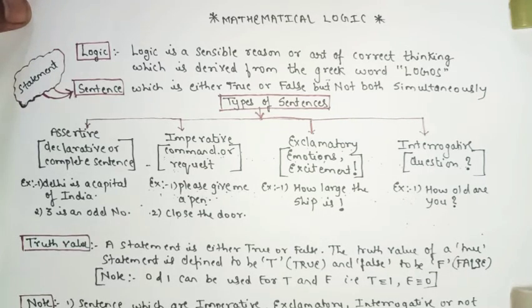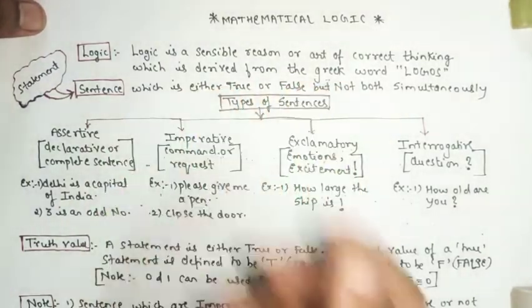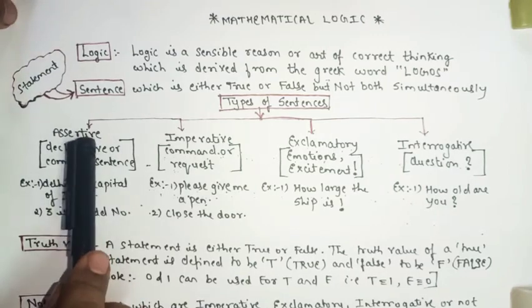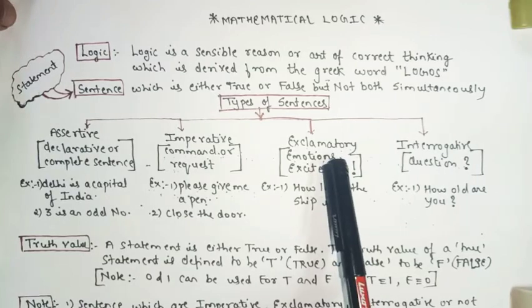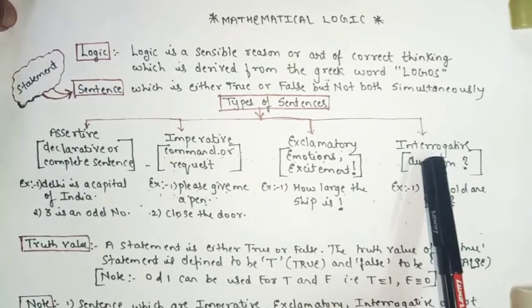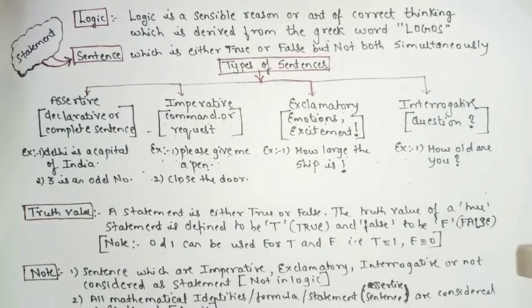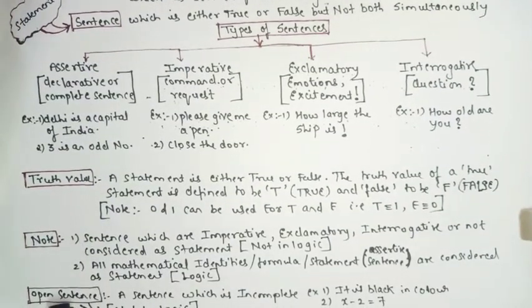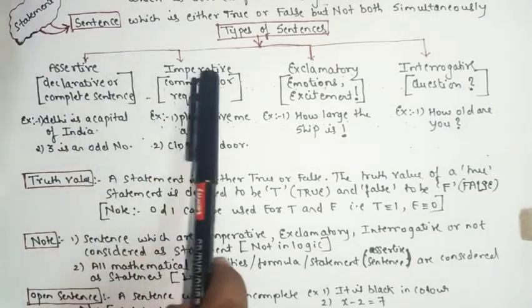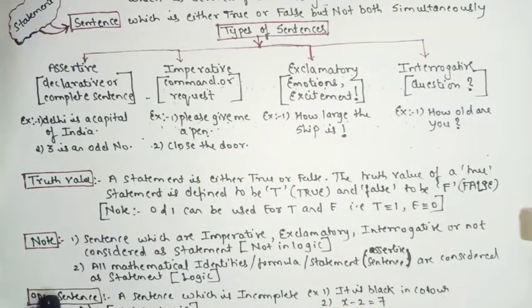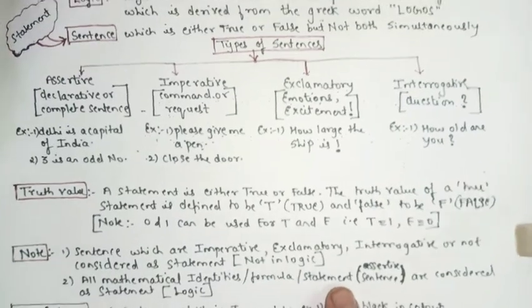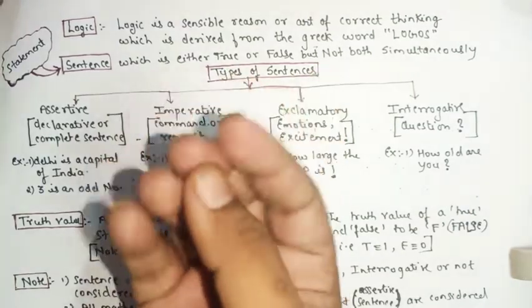Now let's look at the types of sentences. There are five types of sentences. The first one is Assertive, the second one is Imperative, the third is Exclamatory, the fourth is Interrogative, and the fifth one is Open Sentence. You will have read the first four in grammatical language — assertive, imperative, exclamatory, interrogative — but open sentence is something you may not know yet.